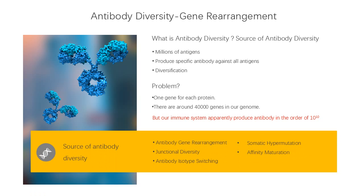In fact, there are around 40,000 genes in our genome. These genes code for all kinds of proteins in our system, like enzymes, regulatory proteins, immunoglobulins, etc. There are only a few genes in our genome that code for Ig. But our immune system apparently produces antibodies in the order of 10 to the 10th power. How does this become possible?